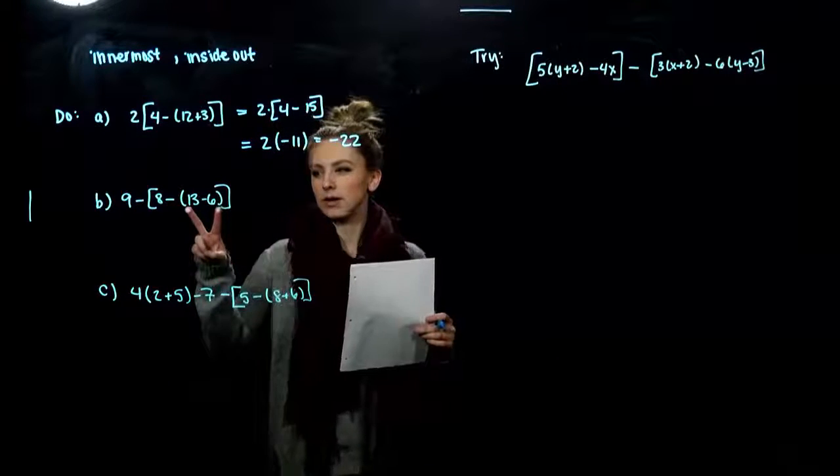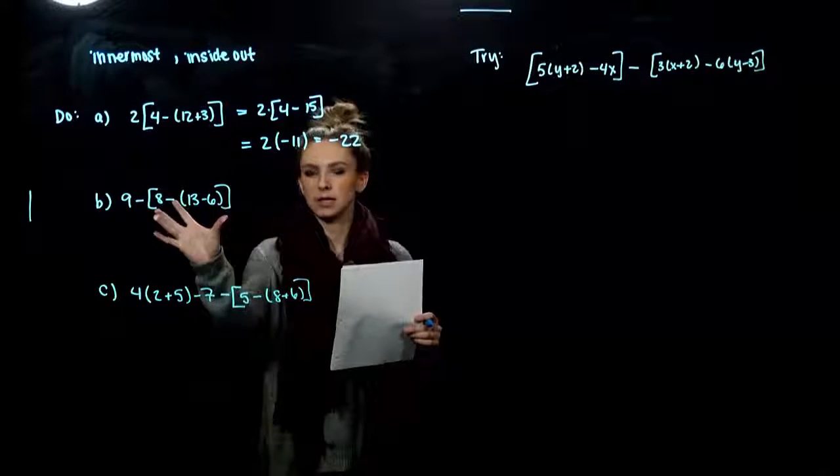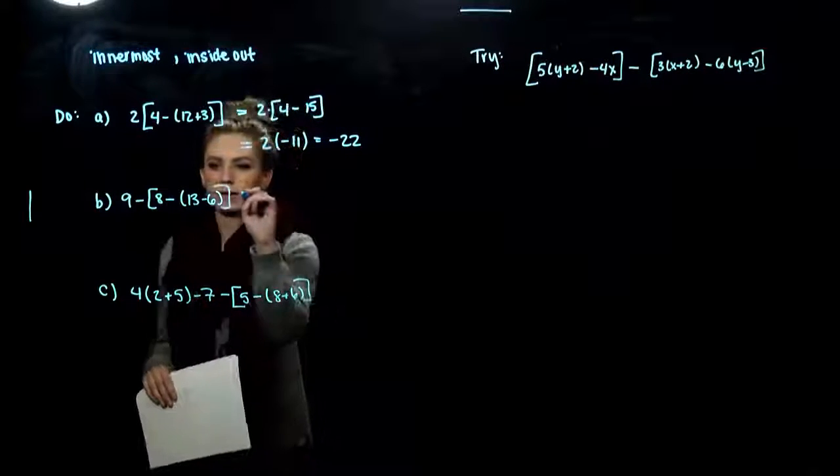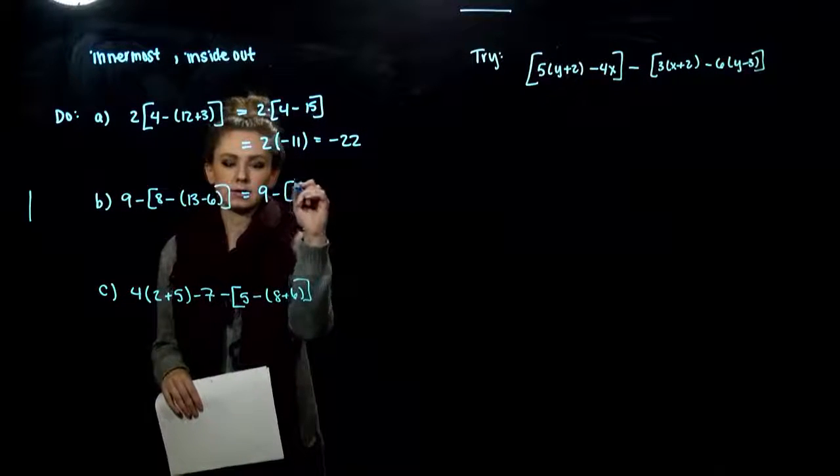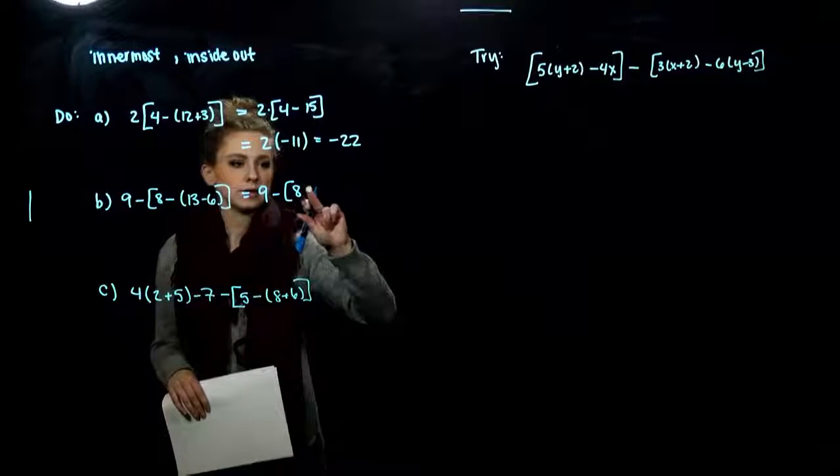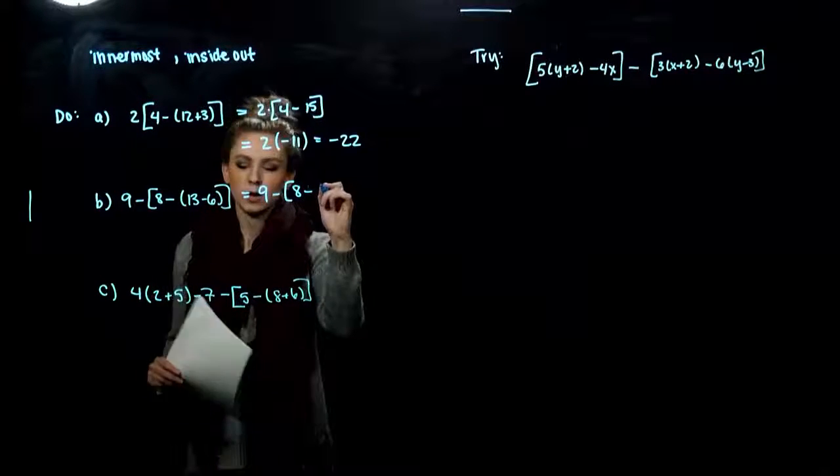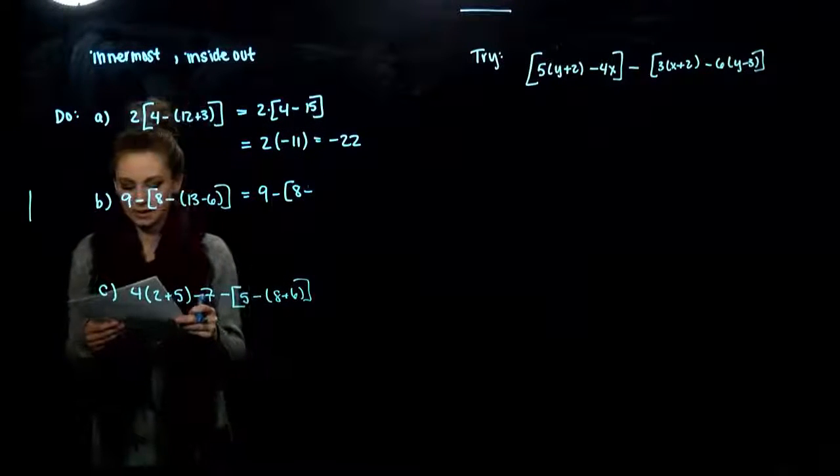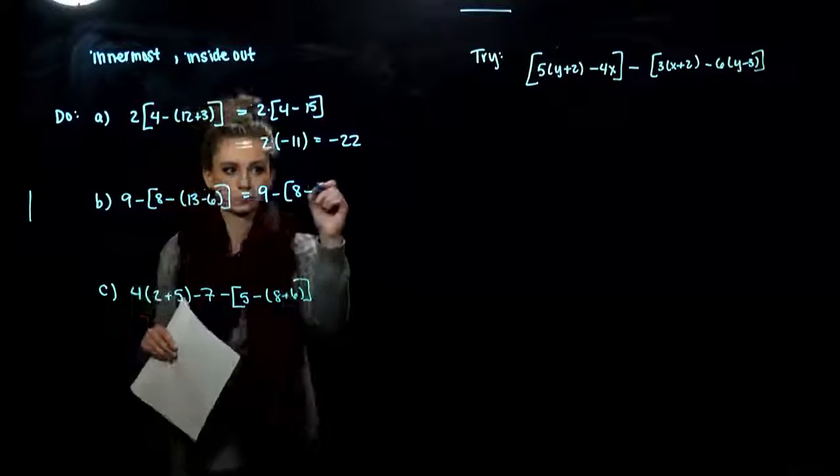Second one. Again, working from the innermost, then to the outside, then even larger than that. So if I'm combining 13 minus 6, what are we looking at on the inside there? 7.